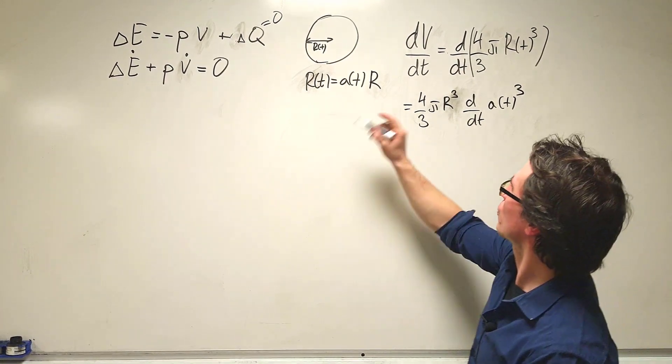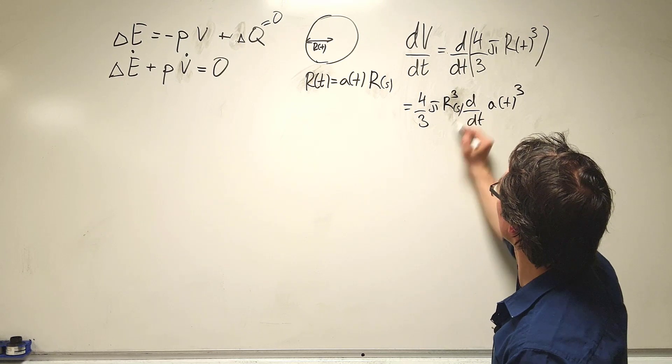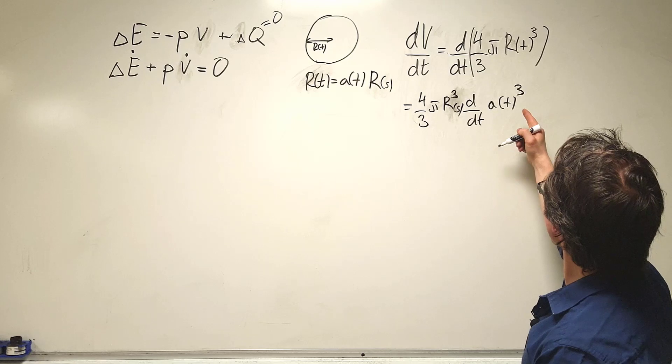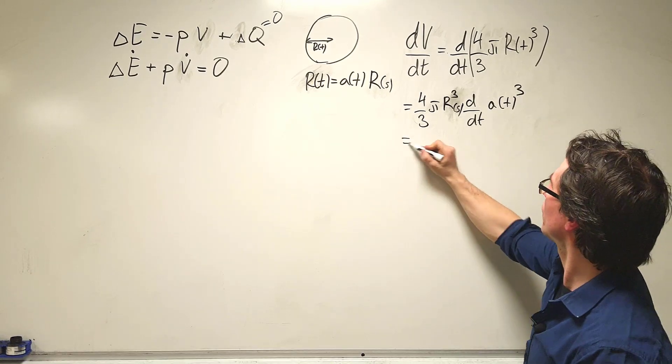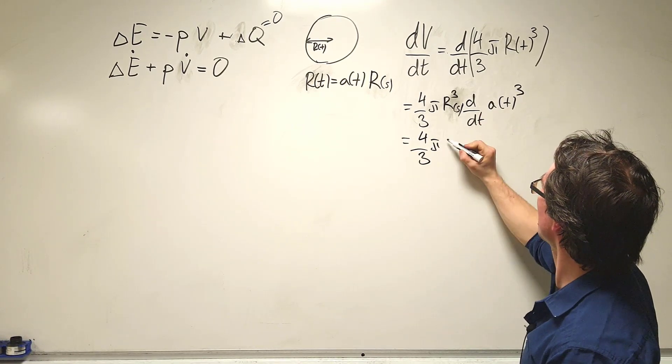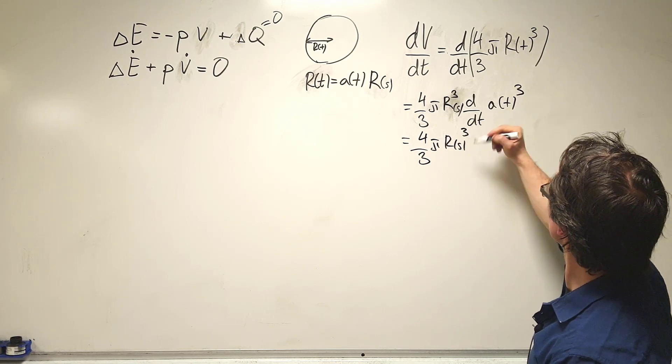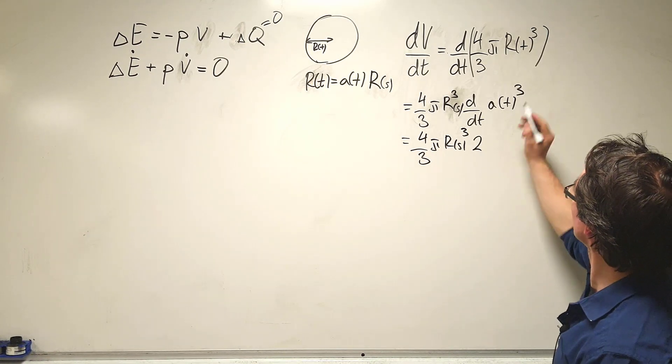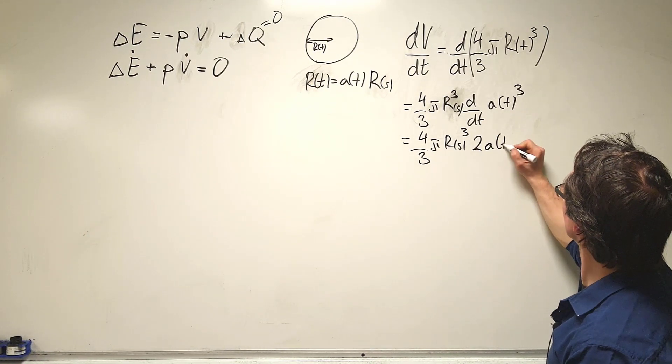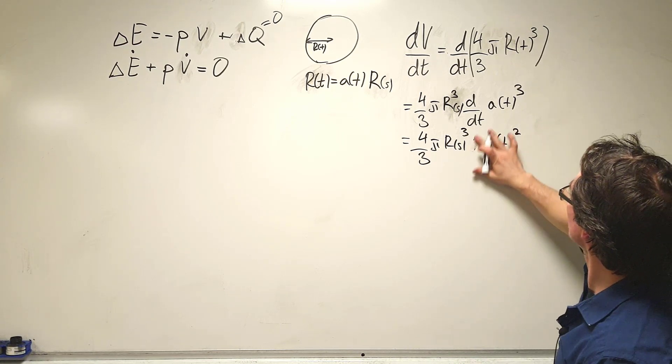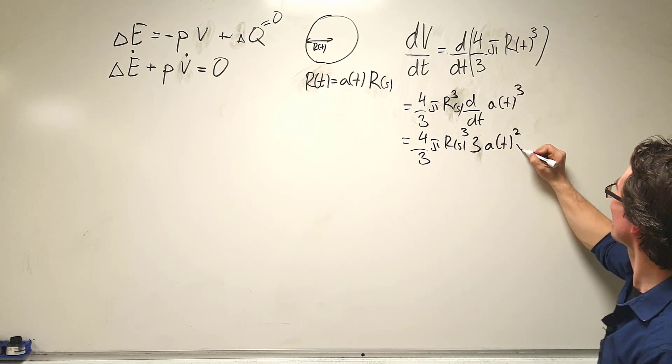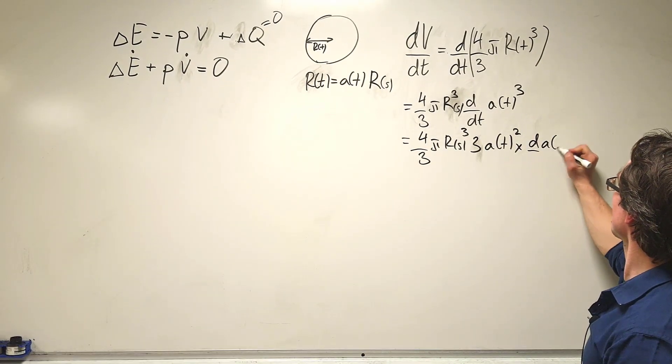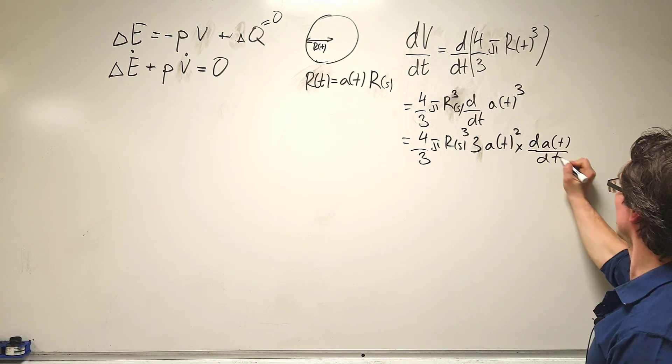We denote this as having a little dependence on the distance only. Using the chain rule, this equals four thirds pi rs cubed times 3a(t) squared multiplied by da(t)/dt.